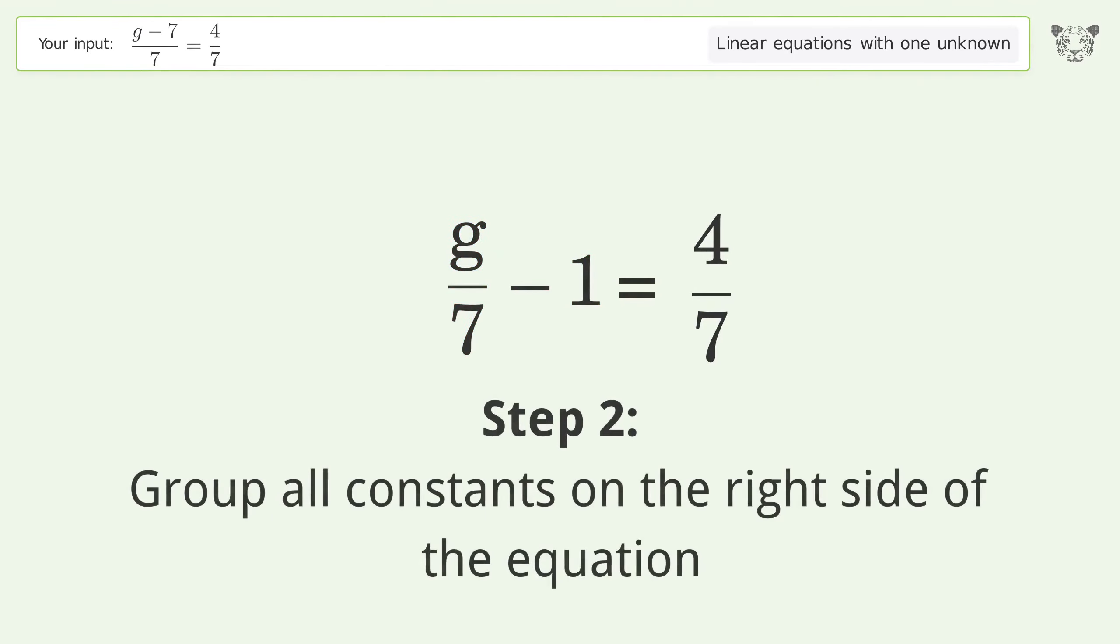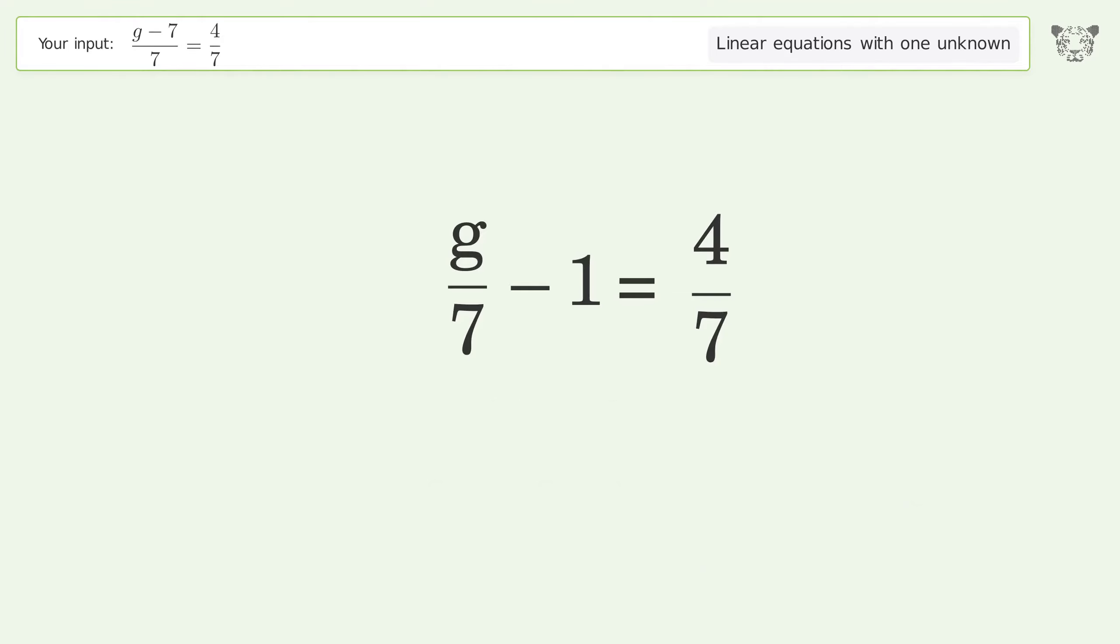Group all constants on the right side of the equation. Add one to both sides. Simplify the arithmetic.